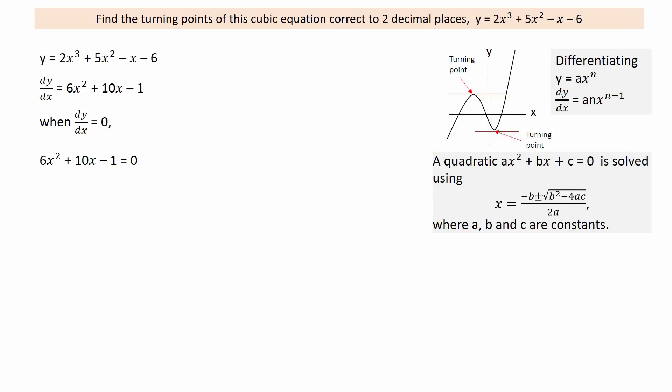Since the solutions are clearly not integers, comparing the two quadratic equations shows that a equals 6, b equals 10, and c equals minus 1. Substituting the values of a, b and c in the quadratic formula to obtain the result given.